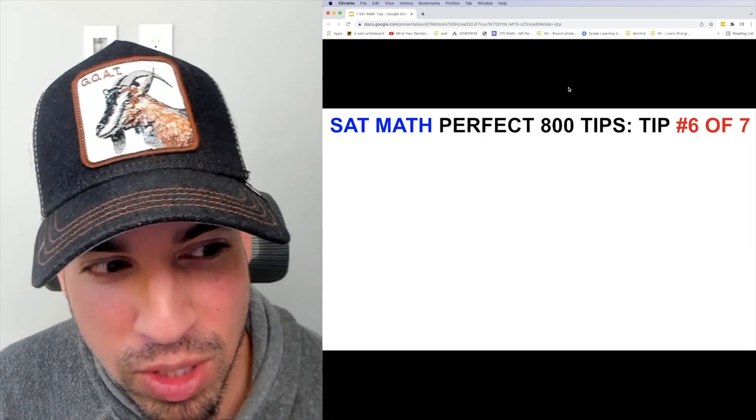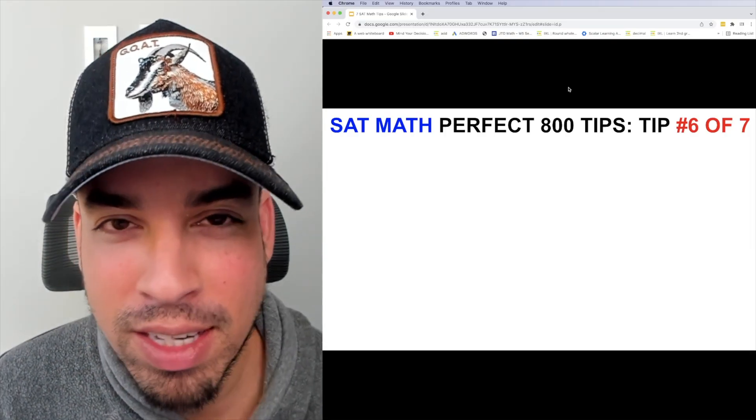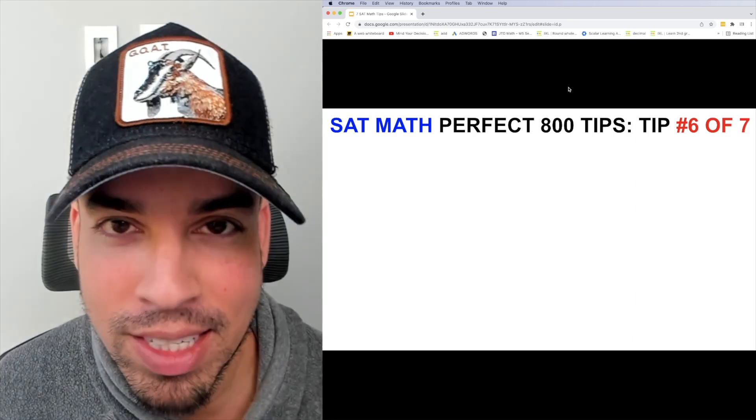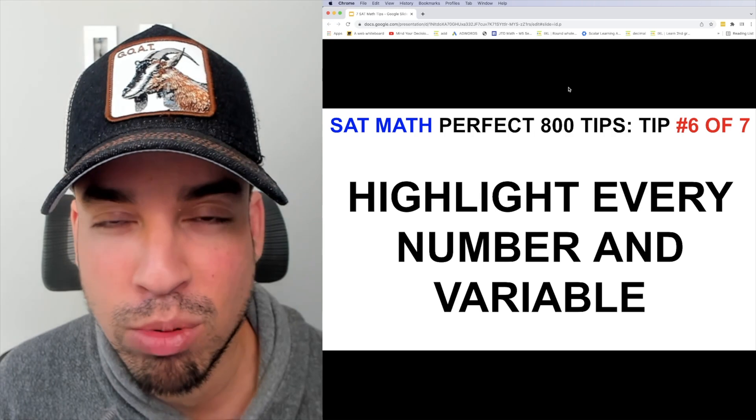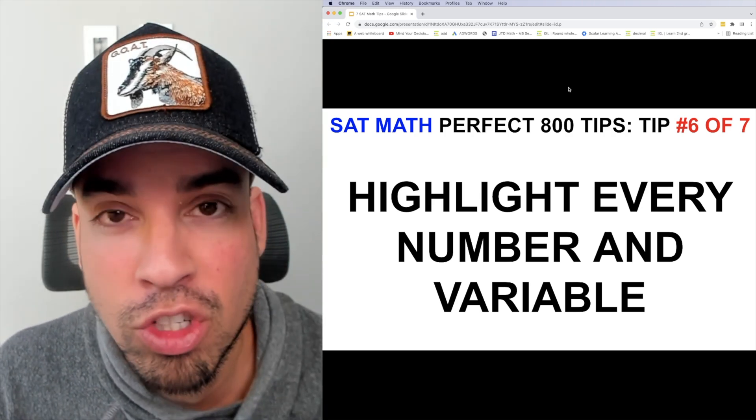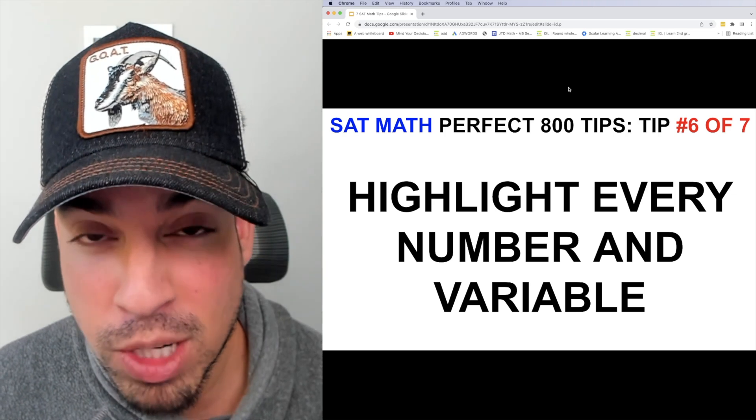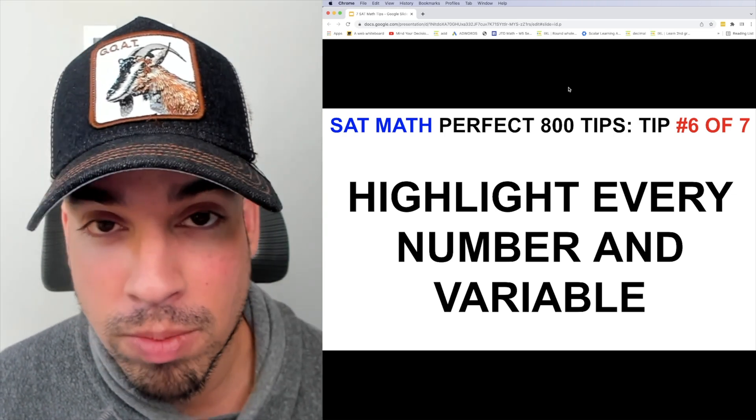What's up everybody and welcome back to the SAT Math Perfect 800 Tips series. This is tip number six: highlight every number and variable. This seems so simple, seems so obvious, but it makes a huge difference and will really help you, especially with some of the really longer word problems.